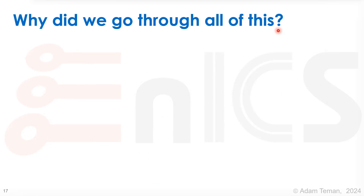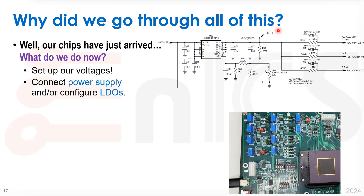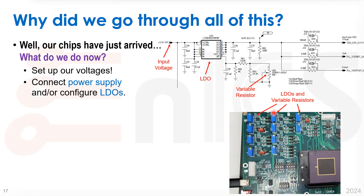We've covered bootstraps, reset behavior, and Smart UART because our chips just arrived and we need to bring them up. We start by setting up voltages — connecting the power supply and configuring the low-dropout converters. The input voltage comes from the FTDI chip via USB-C at 3.3 V, but we need lower voltages. These go into LDO chips which, via a resistor ladder, output the required voltage to the chip. We have variable resistors — the blue trimmer potentiometers — with a screw to adjust voltage, and measurement points to verify what's going to the chip.